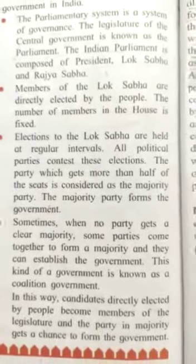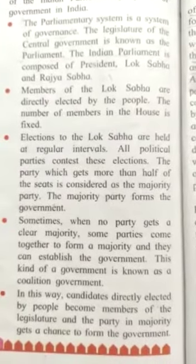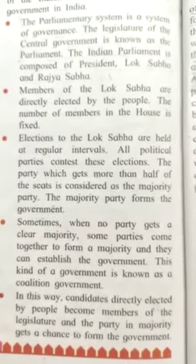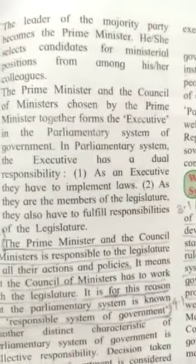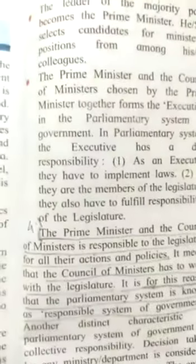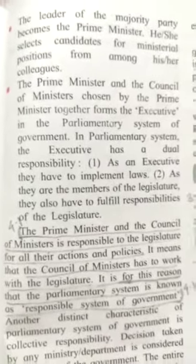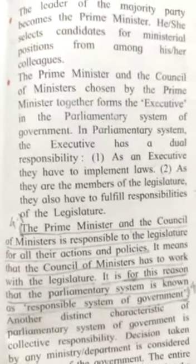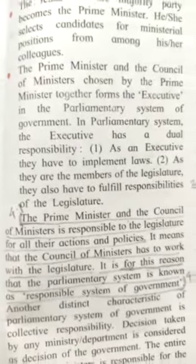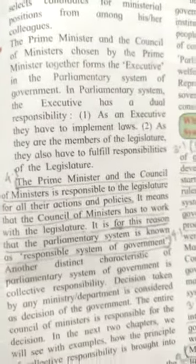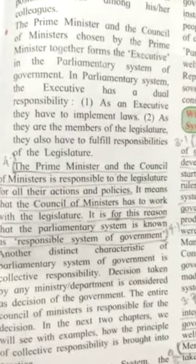The party in the majority gets a chance to form the government. The leader of the majority becomes the prime minister, and he or she selects candidates for ministerial positions — such as the finance minister — from among his or her colleagues. The prime minister and the council of ministers together form the executive in the parliamentary system of government.